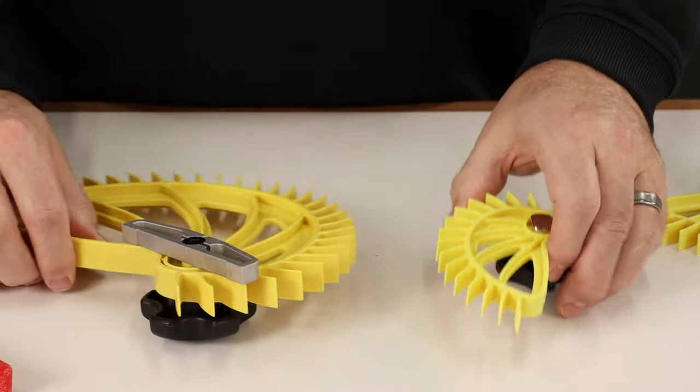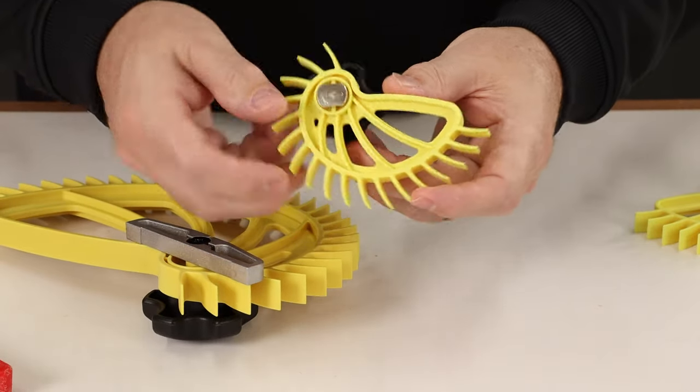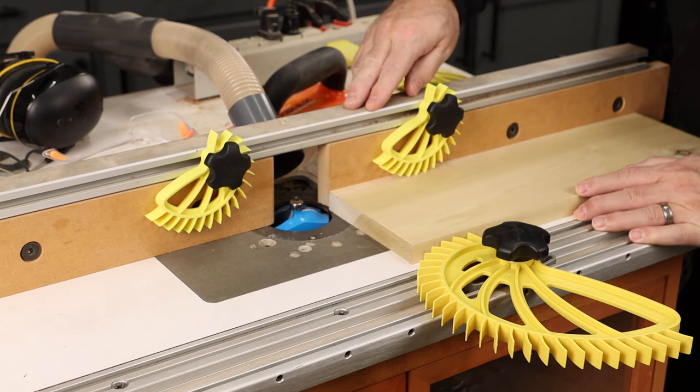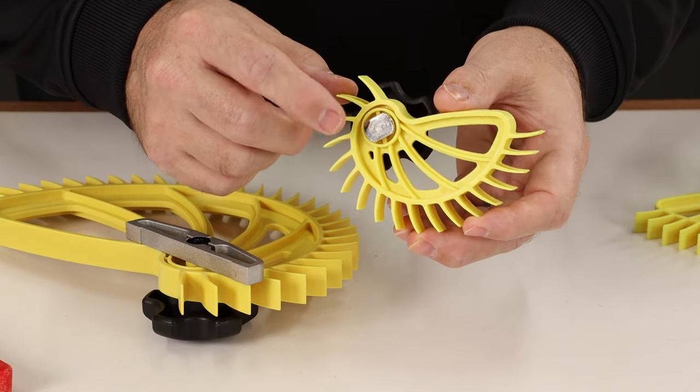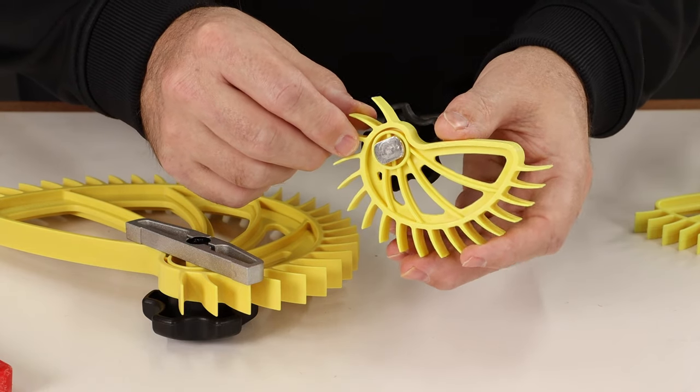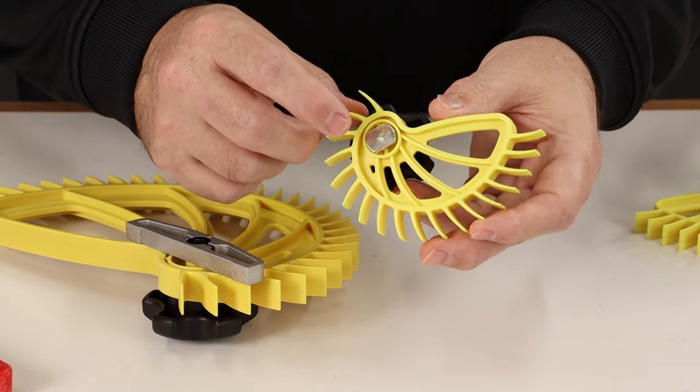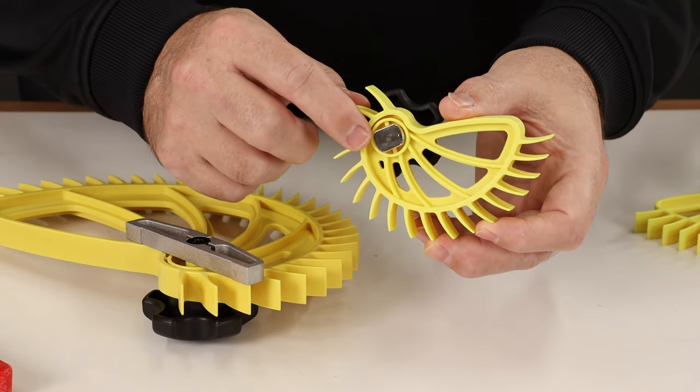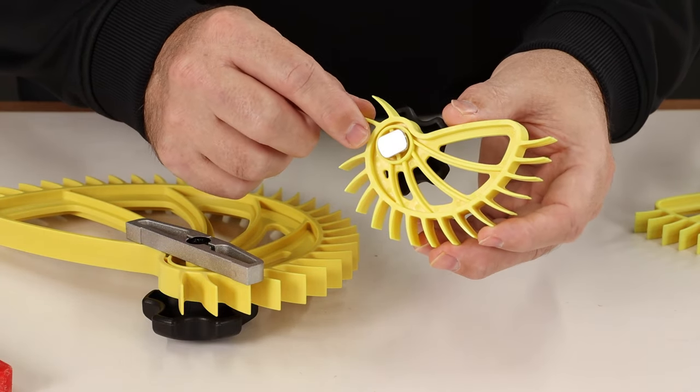The mini hedgehog has a t-bolt and that mounts into a regular metal t-track or sometimes you can adapt it to a shop-made wooden fence that you would clamp to your main fence of your saw or router. A lot of different options to make that work, but the key point is that it has a different mounting system and needs to be installed on a t-track.